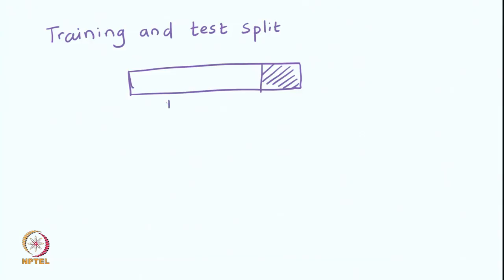One way of solving that problem is taking the entire training data and dividing it or partitioning it into two parts: one is the training and the second is the test. Use a large chunk of the data for training and hold out a small percentage of data for test. Usually we use 80% data for training and 20% data for testing. The model will be trained based on training data, and test data will not be exposed to the model.